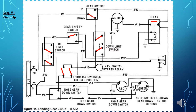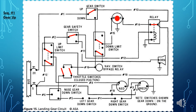With the gear switch in the up position, current will flow from the bus, through the gear switch, through the up limit switch, and the gear safety switch to the relay. With the relay energized, the relay contacts will close, allowing current to flow through the relay to the gear motor and ground, raising the landing gear. Once the gear starts to rise, the down limit switch will change position, closing the circuit between the gear switch and the gear motor.